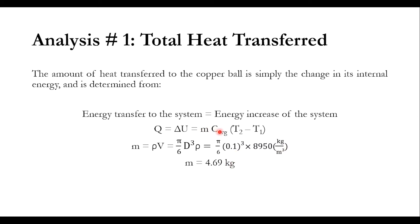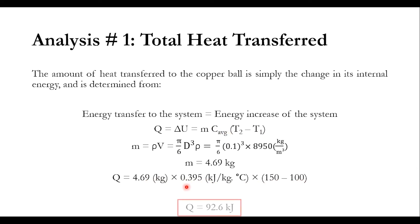Now we know m, c, T2, and T1. So: 4.69 kg multiplied by 0.395 kilojoule per kg degree centigrade, multiplied by (150 minus 100). This gives a final answer of Q equals 92.6 kilojoule. So 92.6 kilojoule of heat must be transferred to the copper ball to raise its temperature from 100 to 150 degree centigrade.